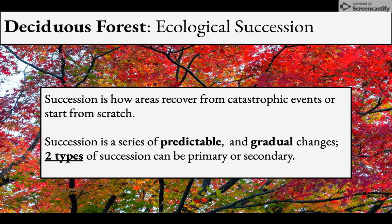Ecological succession is how areas recover from catastrophic events or start from scratch — those are the two different kinds we'll talk about. An area might be a mature forest wiped out by a catastrophic event, or it could be a brand new area like where magma from a volcano has cooled and turned into rock. Succession happens in a predictable series and is very gradual.